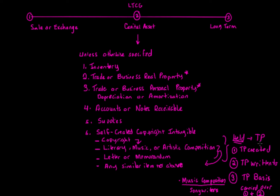When would a taxpayer's copyright, literary music, or artistic composition actually be considered a capital asset? If the taxpayer purchased the self-created intangible from the owner that created it, that would now be a capital asset because it's not self-created — they didn't create it. Another example: if the taxpayer owned the song and died and it was transferred at death with a stepped-up basis to fair market value, then it potentially could be considered a capital asset. But if it was carryover basis at death, it would still not be a capital asset.